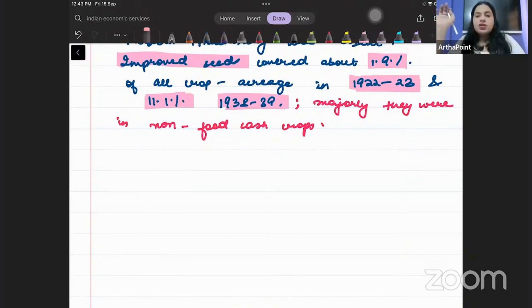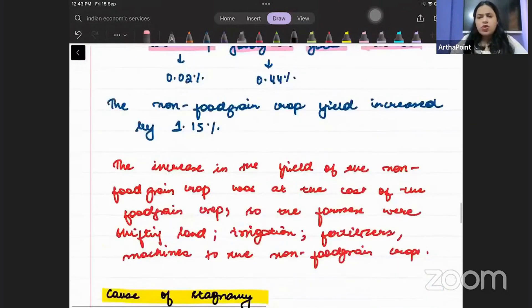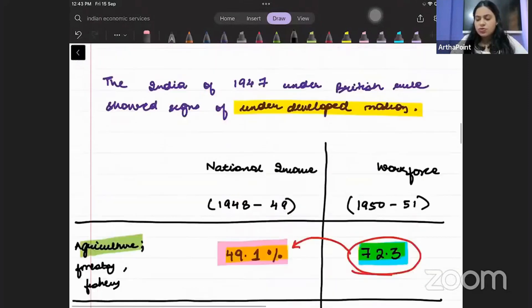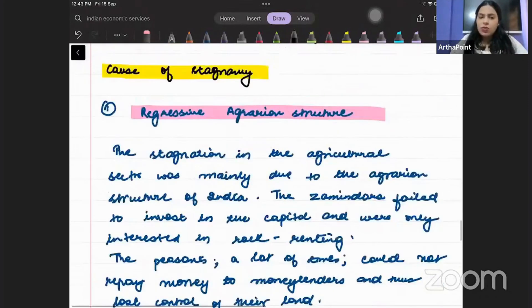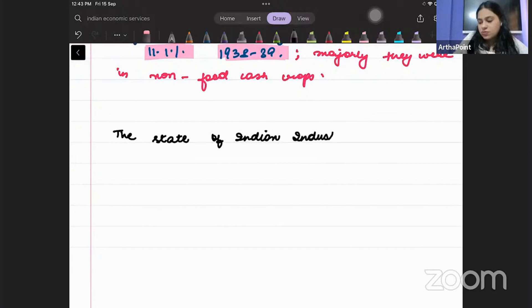Please write down. These are what we had done in the last class. We talked about the causes of stagnancy, we talked about the agricultural sector. Today I want to start with the state of Indian industry and its structure.